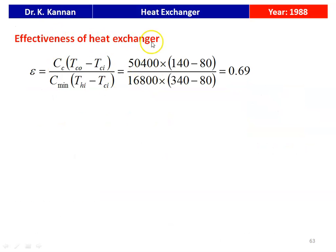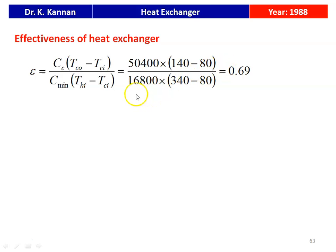The effectiveness of the heat exchanger: ε = CC × (TCO − TCI) / (C_min × (THI − TCI)) = 50,400 × (140 − 80) / (16,800 × (340 − 80)) = 0.69. So the effectiveness of the heat exchanger is 0.69.